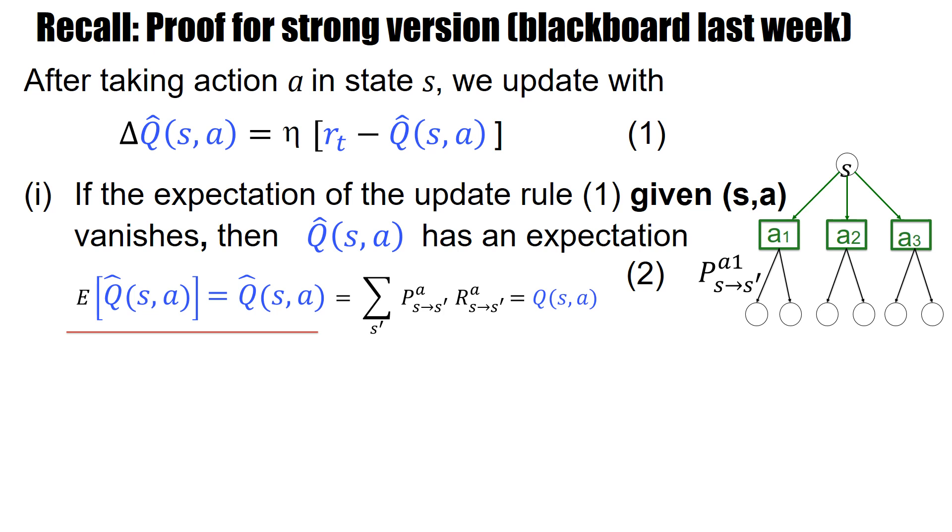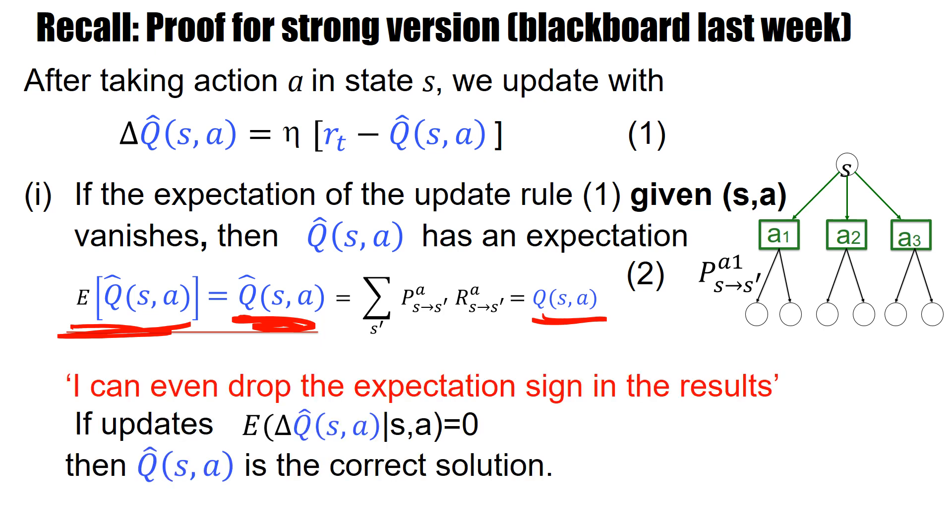Now we can consider proofs and for the proof we can even go one step further and make the following statement. It's actually not just the expectation that matters but it's the Q hat itself that is equivalent to the real Q value. Which means I can drop the expectation sign in the result. The first time you see this, this might be a bit surprising.